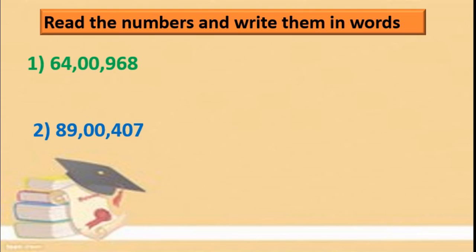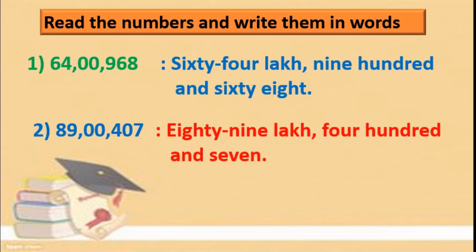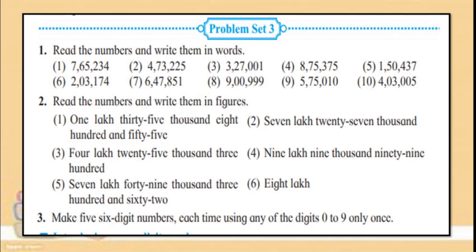Now, read the numbers and write them in words. First one — see the commas. Nothing in thousands, so nothing will come in thousands. Then: sixty-four lakhs nine hundred and sixty-eight. The second one: eighty-nine lakhs four hundred and seven. Next is problem set three — the same things to solve: read the numbers and write them in words, and read the numbers and write them in figures. Practice this, because if you practice properly, then the next portion about crores will become very easy for you.